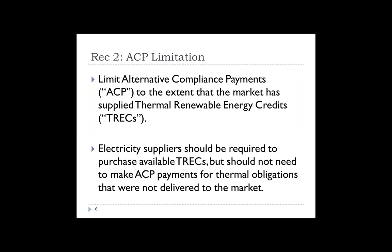A security measure to ensure we did not have a significant negative rate payer impact was to limit the compliance requirement or alternative compliance payment to RECs that were actually generated. So if the requirement was 1,000 retired T-RECs but only 500 T-RECs were generated and available for utilities to purchase, we would only require those 500 available credits to be purchased. This is a security measure to ensure that if not enough projects were developed, utilities aren't required to pay ACP for something they had no capacity to manage.